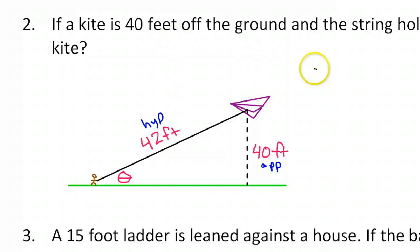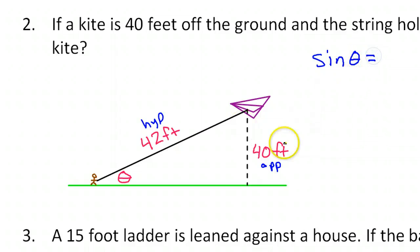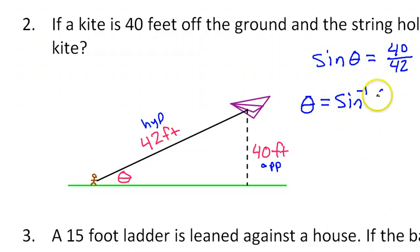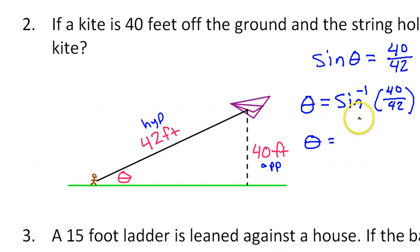Let's set up the sine function. We will say the sine of theta — an angle always goes here — is equal to opposite over hypotenuse, so that's 40 over 42. Now if you want to find the angle, you have to use the inverse trig function. So theta will equal the inverse sine of 40 over 42, and then we can just put this in our calculator.